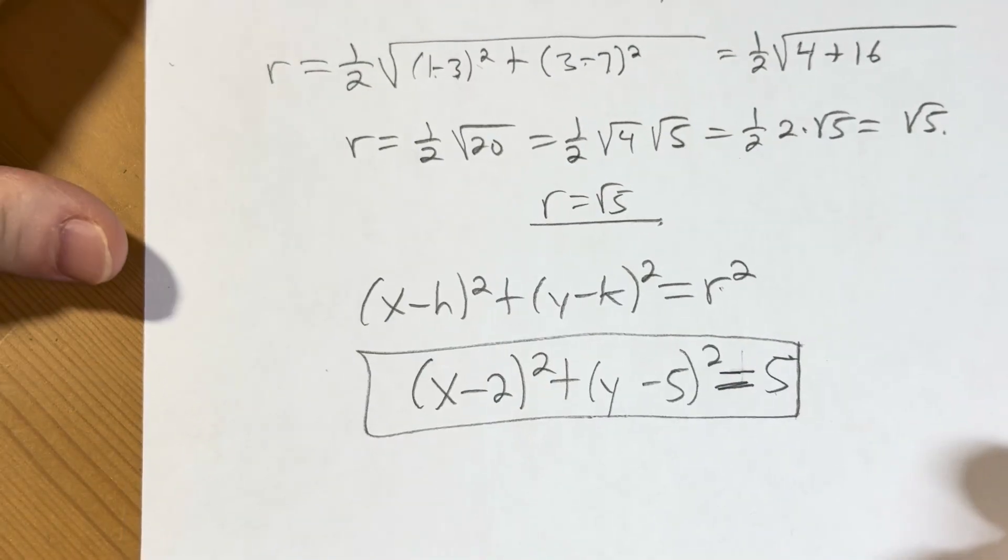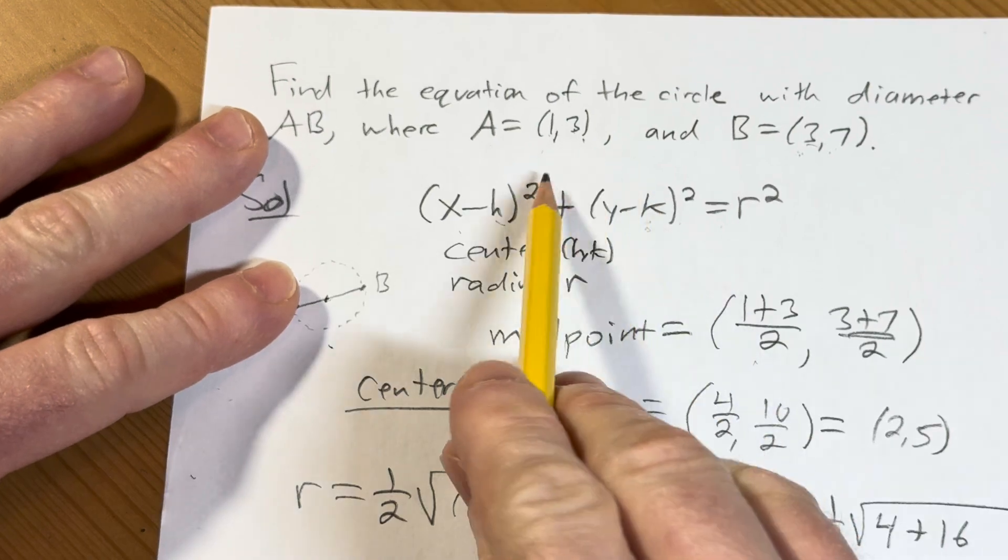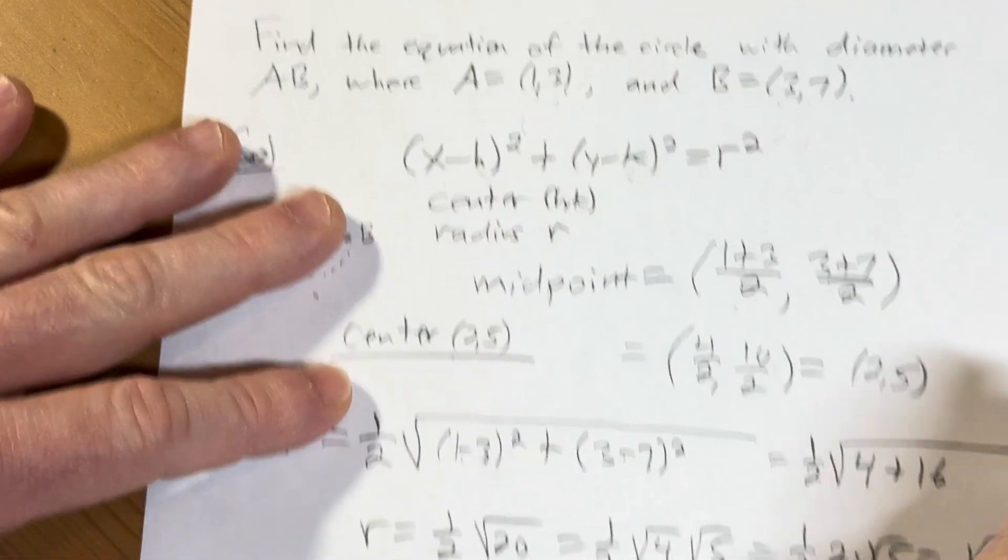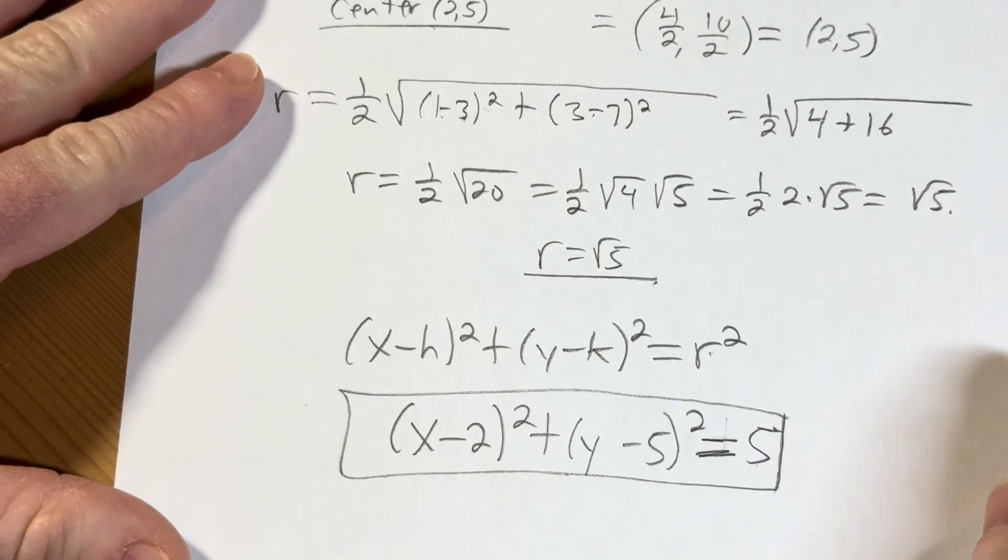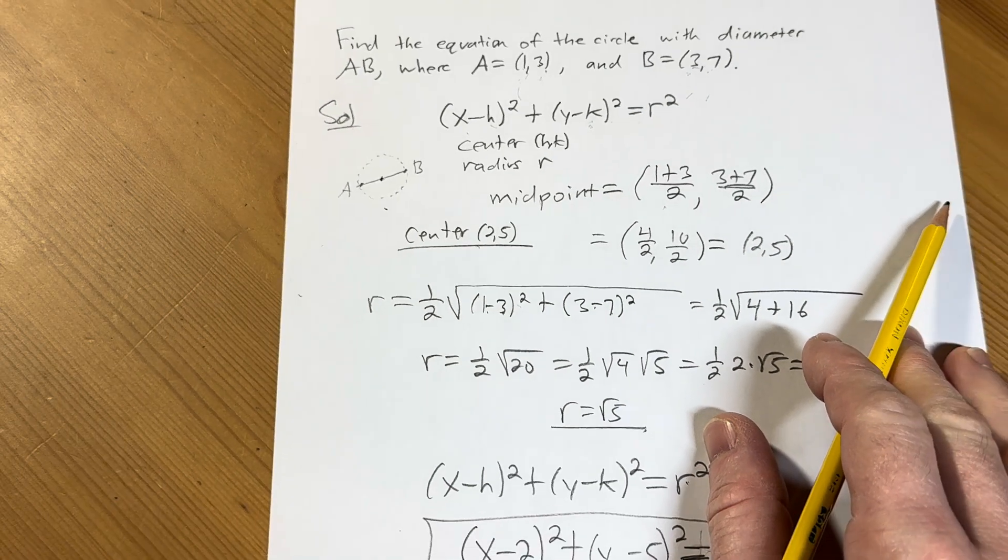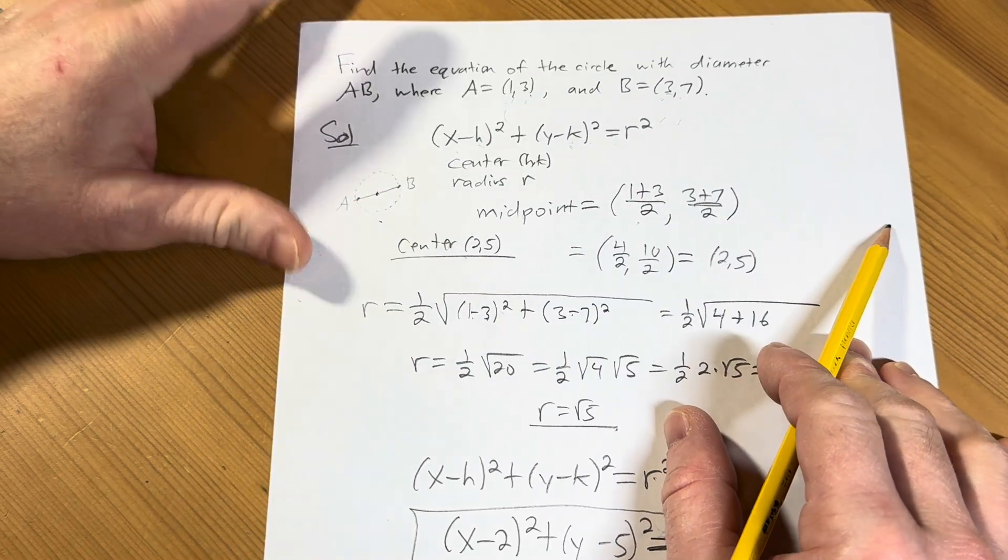That is the equation of the circle with diameter AB where A is equal to the ordered pair (1,3) and B is equal to the ordered pair (3,7). So that's how you work out that problem. Pretty cool. Hopefully you've learned some math.